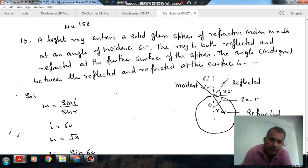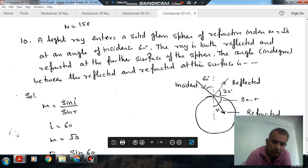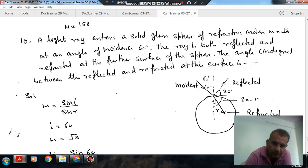The ray is both reflected and refracted at the further surface of the sphere. The angle in degrees between the refracted and the reflected rays at the surface is what we need to find. So this is your incident ray and this is the vertical, and this angle is 60 degrees, the angle of incidence.